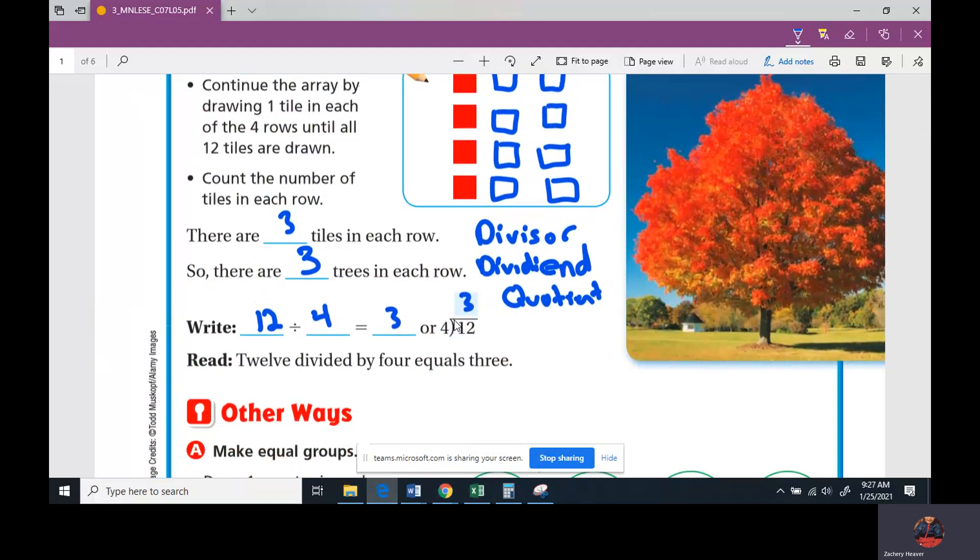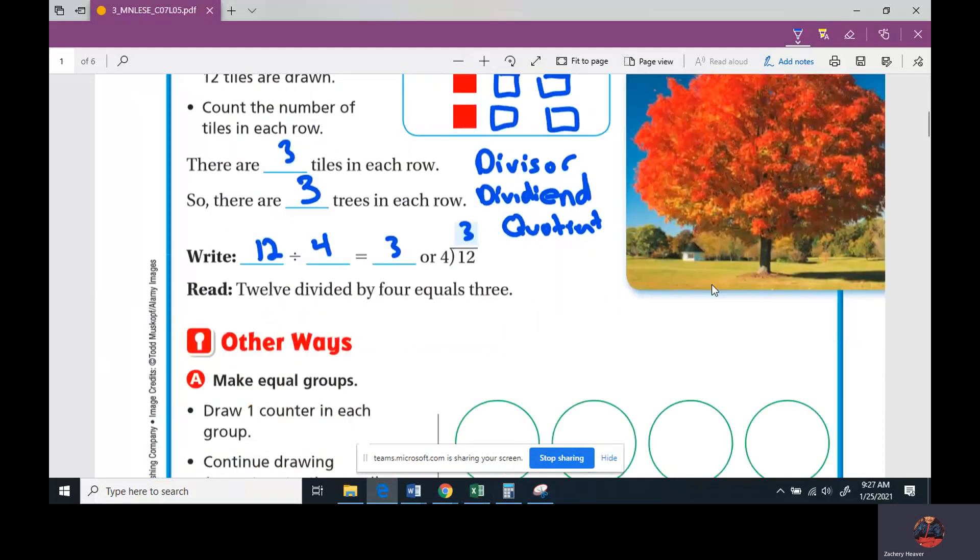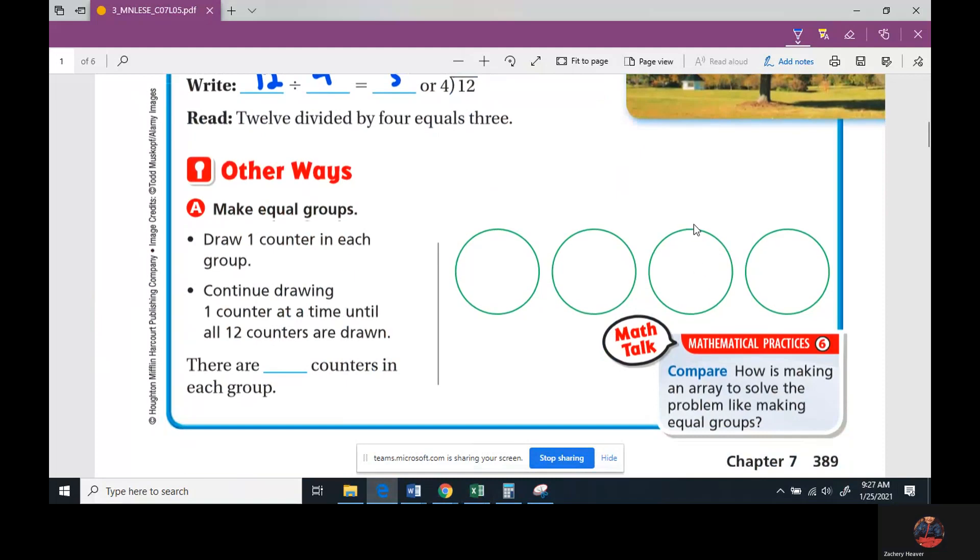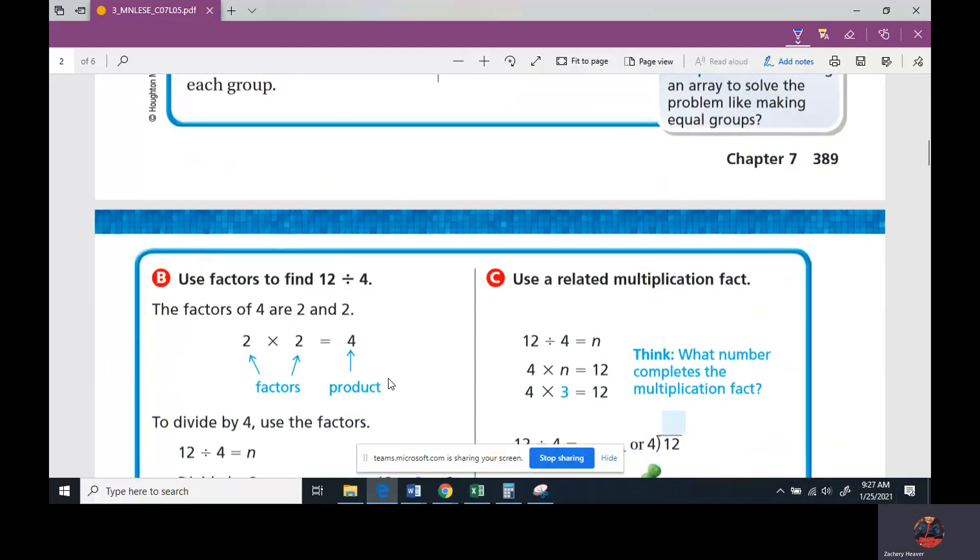Now it says make equal groups. Draw one counter in each group and continue until we have twelve in. Go through and count till we get to twelve: one, two, three, four, five, six, seven, eight, nine, ten, eleven, twelve. It's the same way. Three. When you get good at it, you'll know automatically how many is going to go in there without even counting.